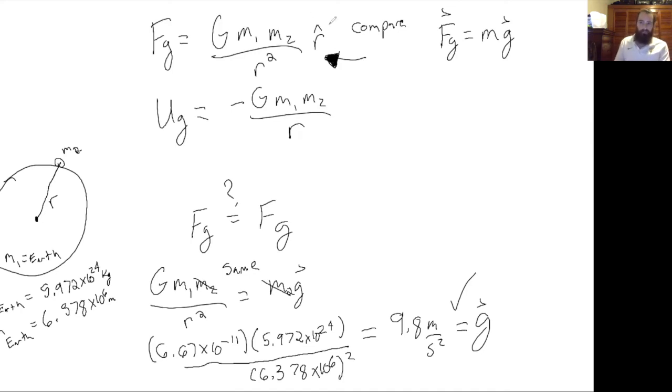Next we'll talk about the escape velocity. That's the velocity that you would need to escape an object's gravitational pull. Let's say we want to leave the surface of mass M1 or of the planet.